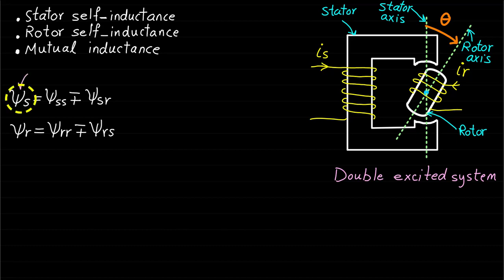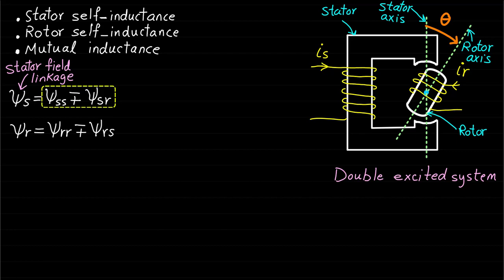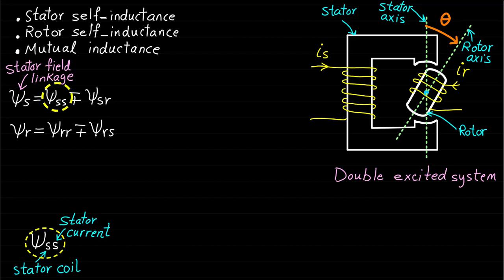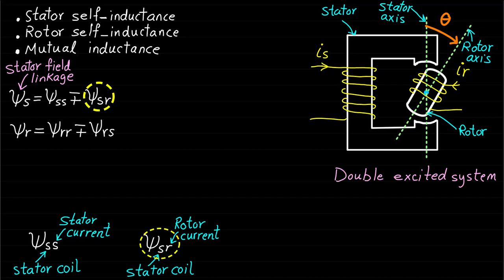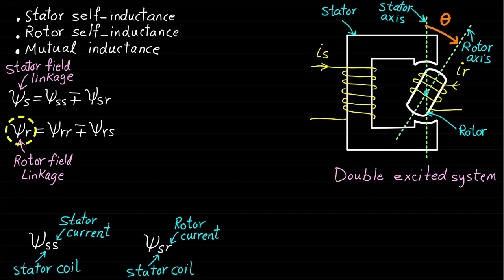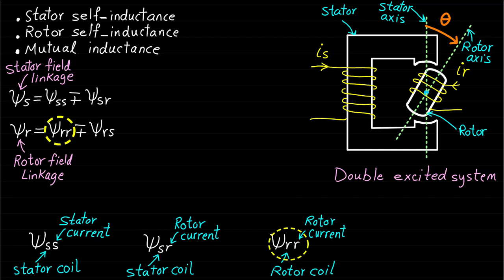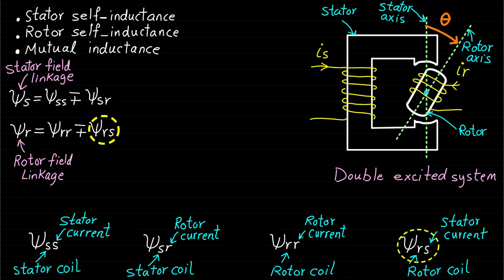Psi-S is the total stator magnetic field linkage of the stator coil and it is equal to Psi-SS plus or minus Psi-SR. Psi-SR is the magnetic field linkage produced by the rotor current and links the stator coil. Psi-R is the total rotor magnetic field linkage of the rotor coil and it is equal to Psi-RR plus or minus Psi-RS. Psi-RS is the magnetic field linkage produced by the stator current and links the rotor coil. Note that the positive sign means that the rotor and stator magnetic fields are in the same direction, and the negative sign means they are in opposite direction.